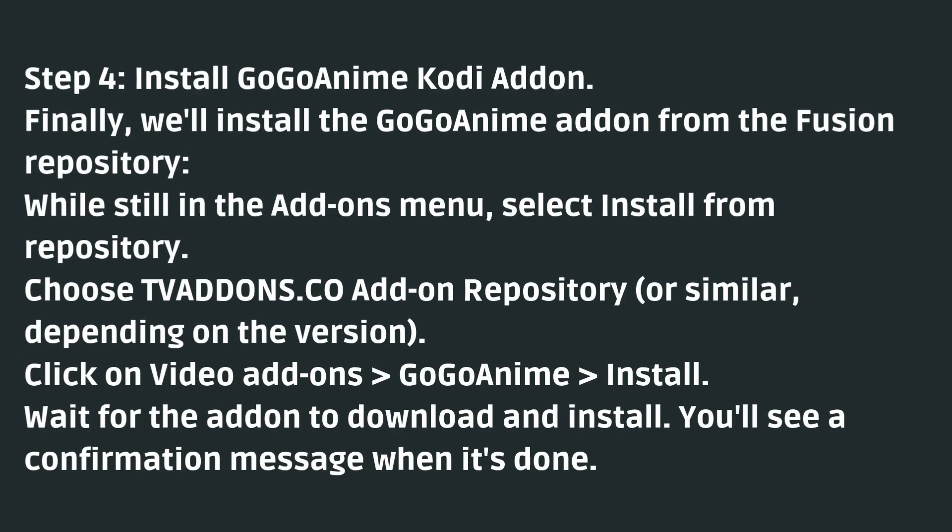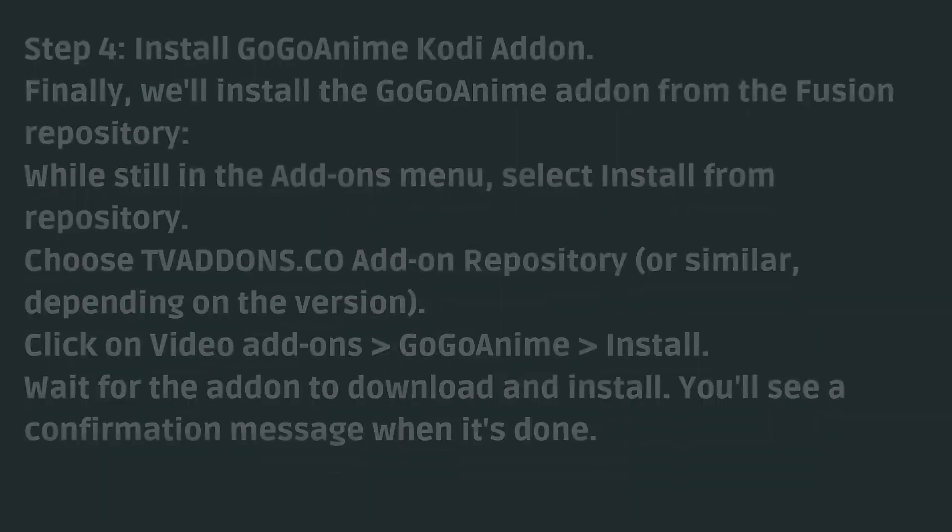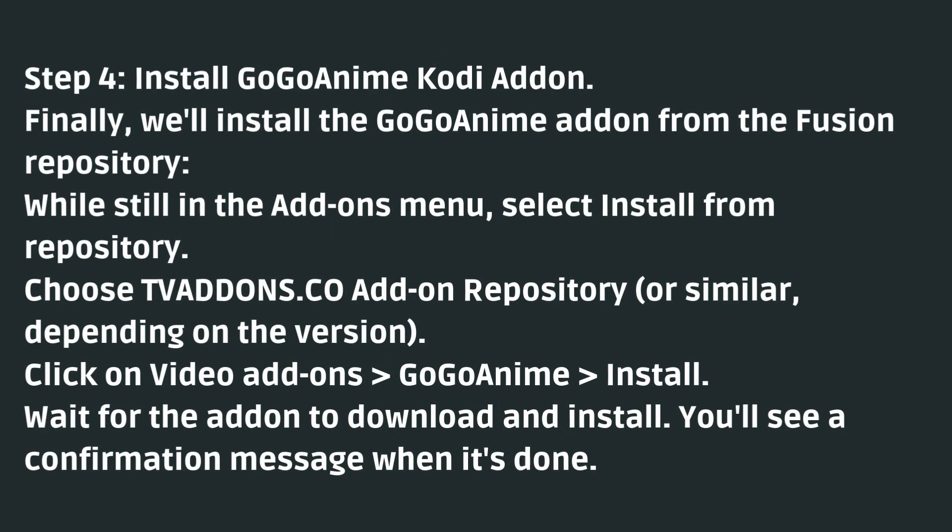Step 4: Install GoGoAnime Kodi Add-on. Finally, we'll install the GoGoAnime Add-on from the Fusion Repository. While still in the Add-ons menu, select Install from Repository, choose TV Add-on CO Add-on Repository, then click on Video Add-ons, GoGoAnime, and Install. Wait for the add-on to download and install. You'll see a confirmation message when it's done.